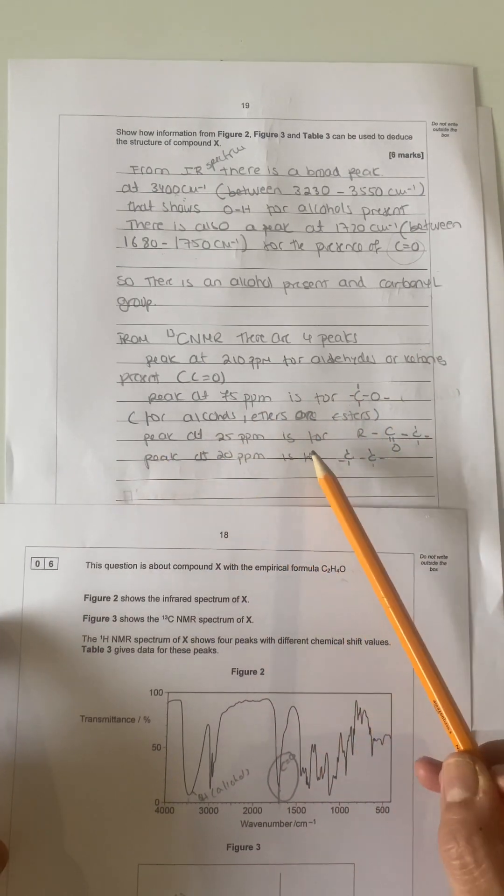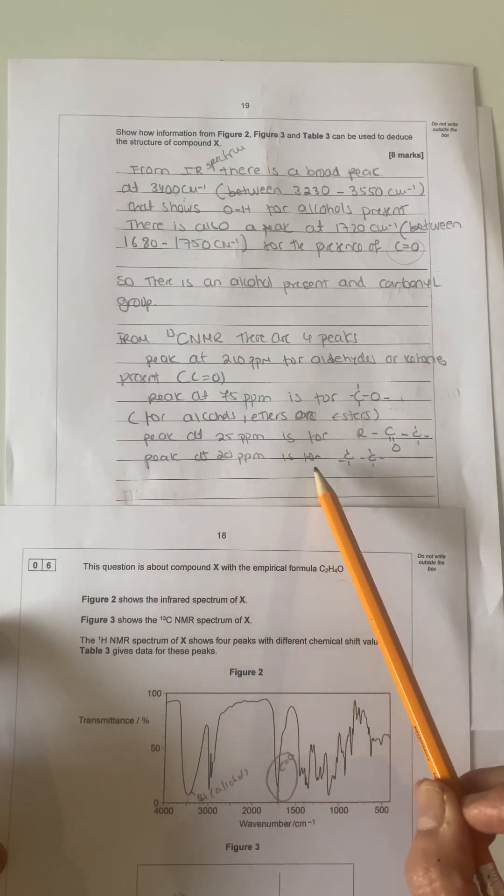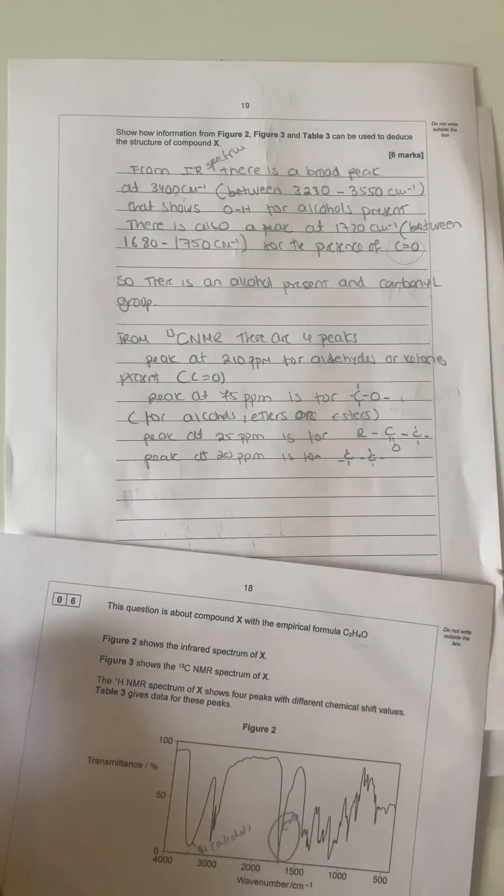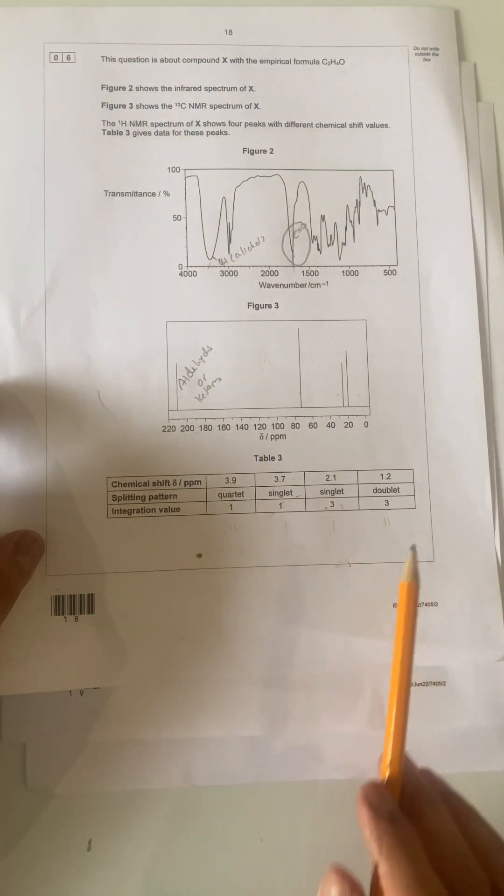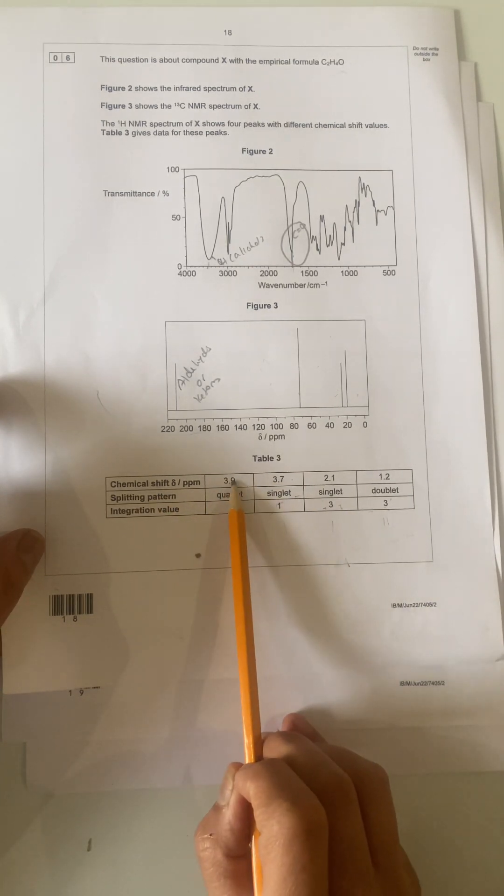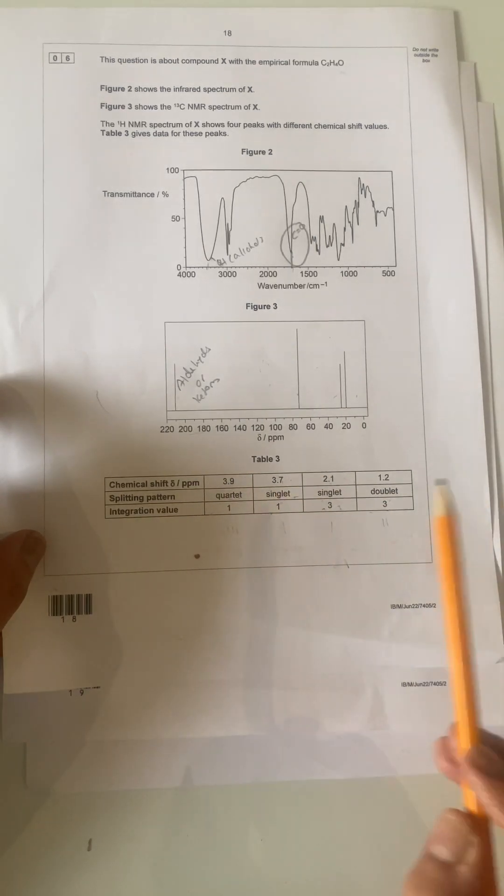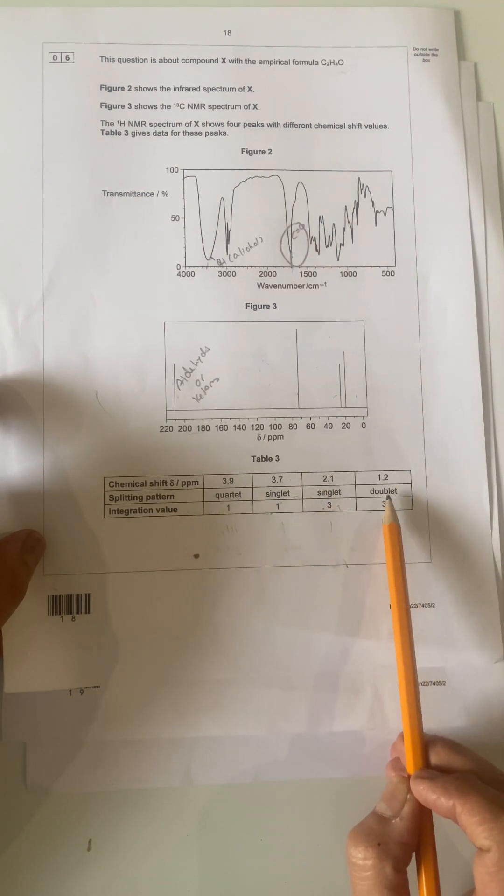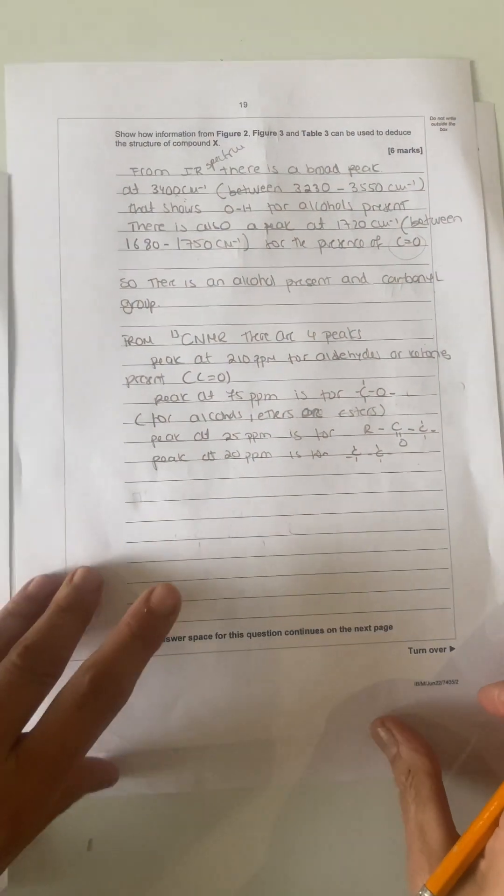The peak at 25 is for this structure here. And the peak at 20 parts per million is for the CH3 bond present. So that's the information. Then you have these values here. You've got a quartet with integration 1 at 3.9 parts per million, a singlet with integration 1 at 3.7 parts per million, a singlet with integration 3 at 2.1, and then a doublet with integration of 3 at 1.2. So that's the information they give you for proton NMR.